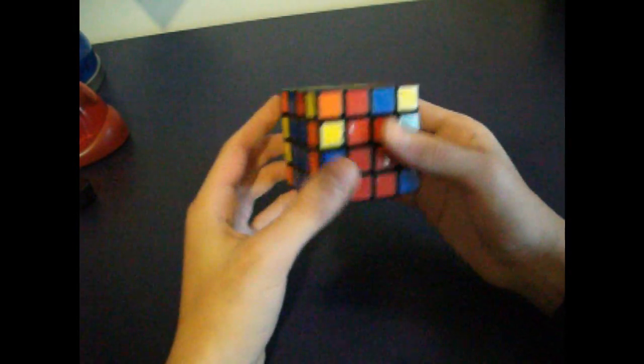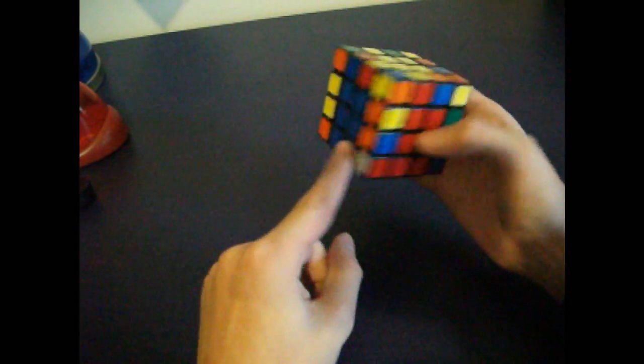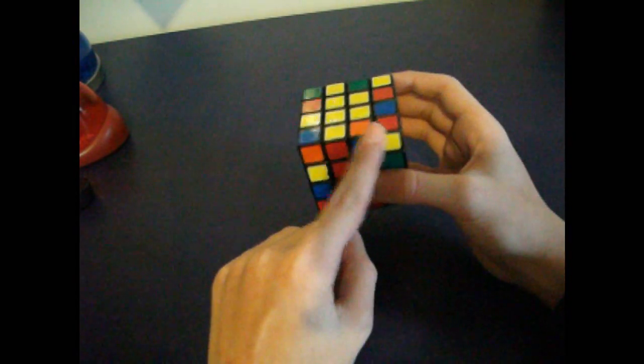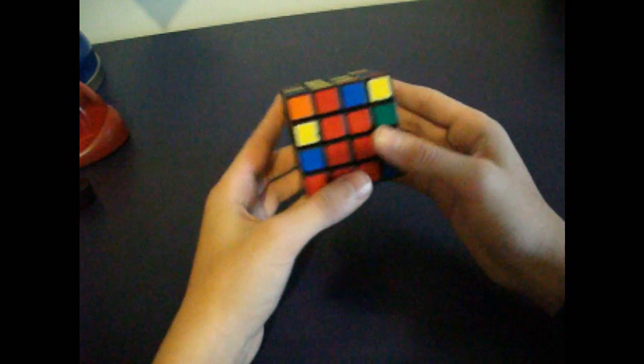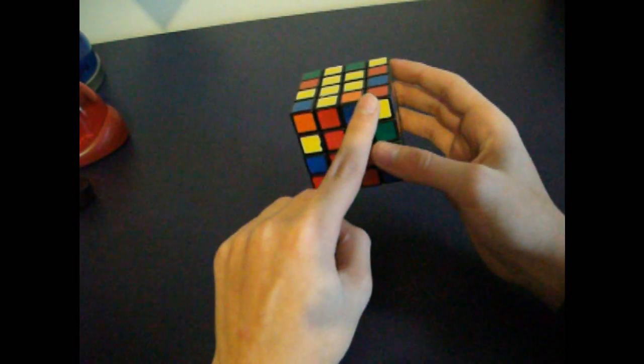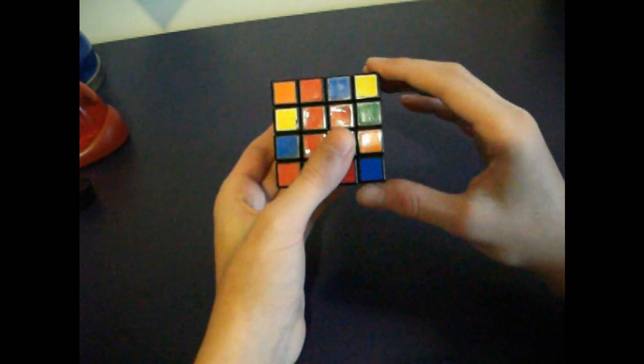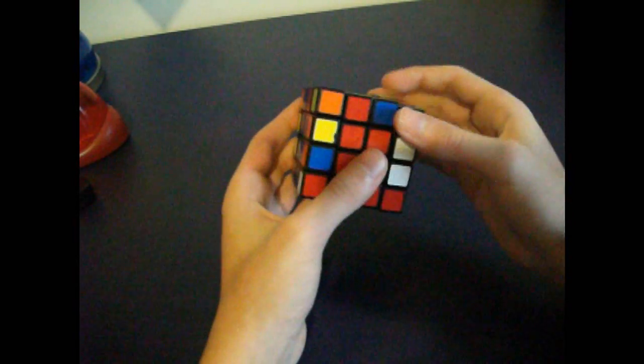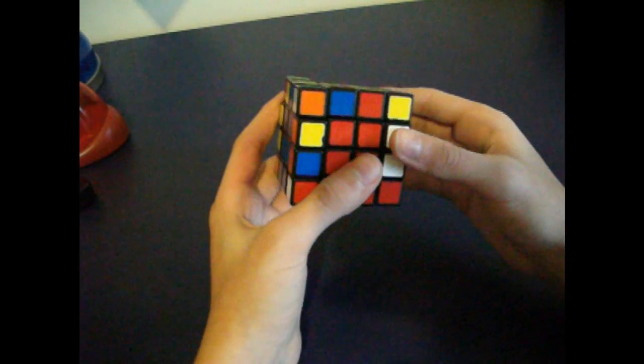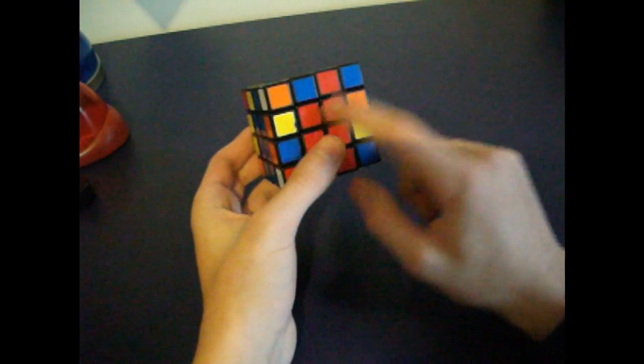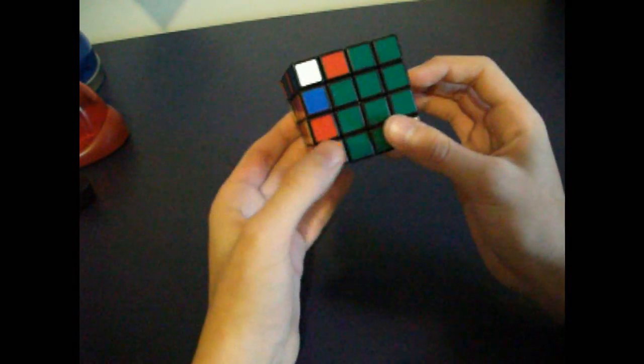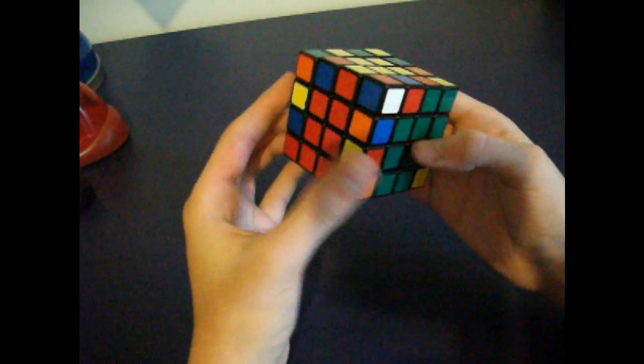Now you just want to pair the rest of the edges. The way you can do that is, I'm going to do the orange and blue as an example. You want to make sure that if one's here and one's down here, the same colors are like this. Bring this layer up, this here, and that back down. Now they're opposite colors. You can keep doing that all the way around.